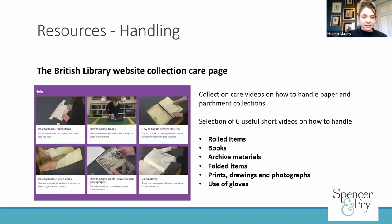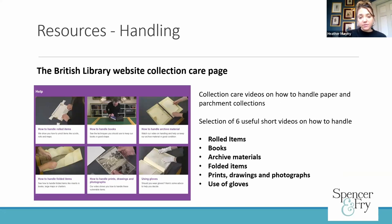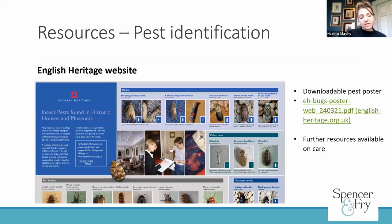So that's pretty much it for specifics on the paper and the parchment. Just to run through a couple of go-to resources that I use: the British Library website has a really useful section on handling collections in general. There's a collection care page there with six videos covering rolled items, books, archival materials, folded items, prints, drawings and photographs, and use of gloves. It gives a visual aid of how ideally things could be worked or managed — I find that very useful. The English Heritage website has a very useful pest identification poster that is downloadable from the website as well, and they've also got more resources available there for collection care. I've also compiled a list of various conservation resources that might be useful.